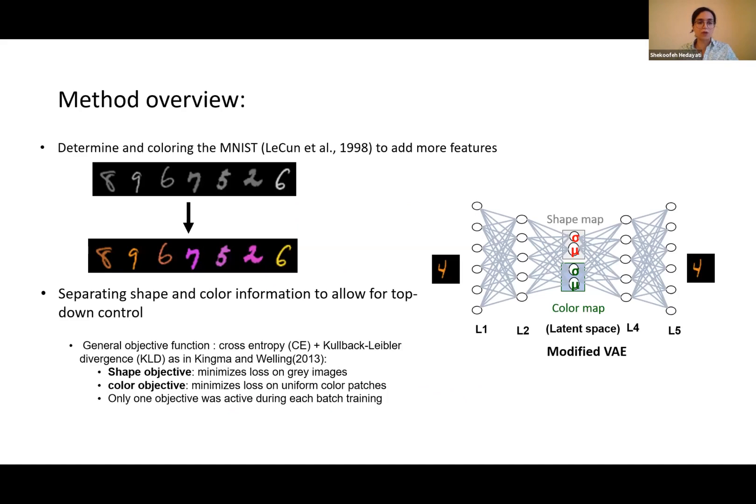The stimuli that we used are MNIST digits. We colorized them with 10 different colors, so we ended up having 10 categories of digits from 0 to 9 and 10 categories of colors: red, yellow, blue, etc. To train the model, we trained the shape map with the shape objective function that minimizes the loss on gray images. For the color map, we trained the model using a color objective function that minimizes loss on uniform color patches. At each batch training, only one of these objective functions was active. Then later, the shape and color information are combined in the later levels.